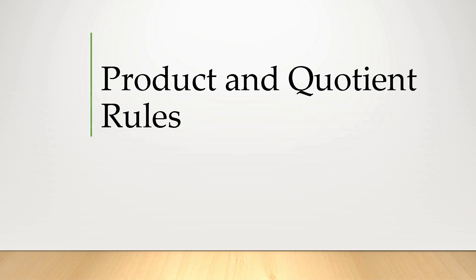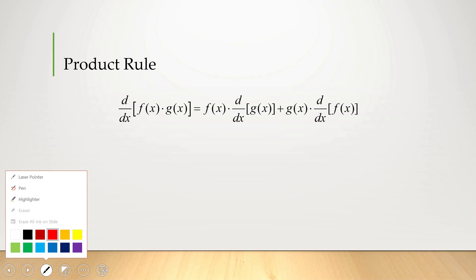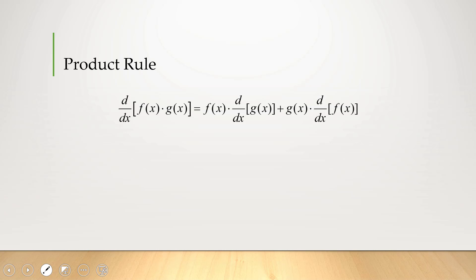In this video, we'll explore the product and quotient rules. The product rule is used whenever you have two functions being multiplied together — two expressions of x multiplied together. The formula is f(x) times the derivative of g(x) plus g(x) times the derivative of f(x). I always found this a little overwhelming to memorize, so I reorder it using u's and v's instead of f(x)'s and g(x)'s.